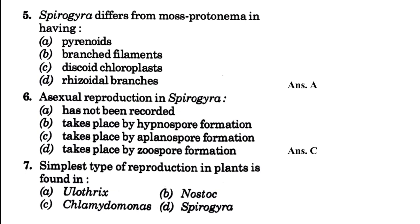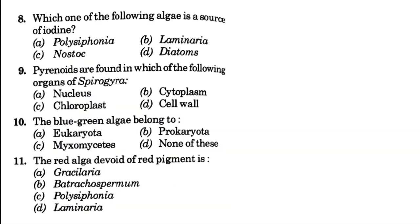The simplest type of reproduction in a plant is found in — blank: Ulothrix, Nostoc, Chlamydomonas, or Spirogyra. The answer is option C, that is Chlamydomonas, which is a unicellular eukaryotic alga. Next, which one of the following algae is a source of iodine? That is Polysiphonia, Laminaria, Nostoc, or diatom. The answer is option B, that is Laminaria, which is a brown alga found in a marine ecosystem.